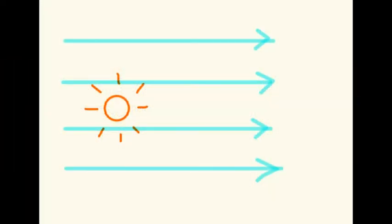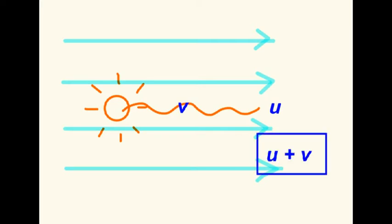Consider a light source with a velocity U relative to an ether. Now think of a wave travelling from the light source with a velocity V. The resultant velocity of the light wave in the direction of the ether would be U plus V.